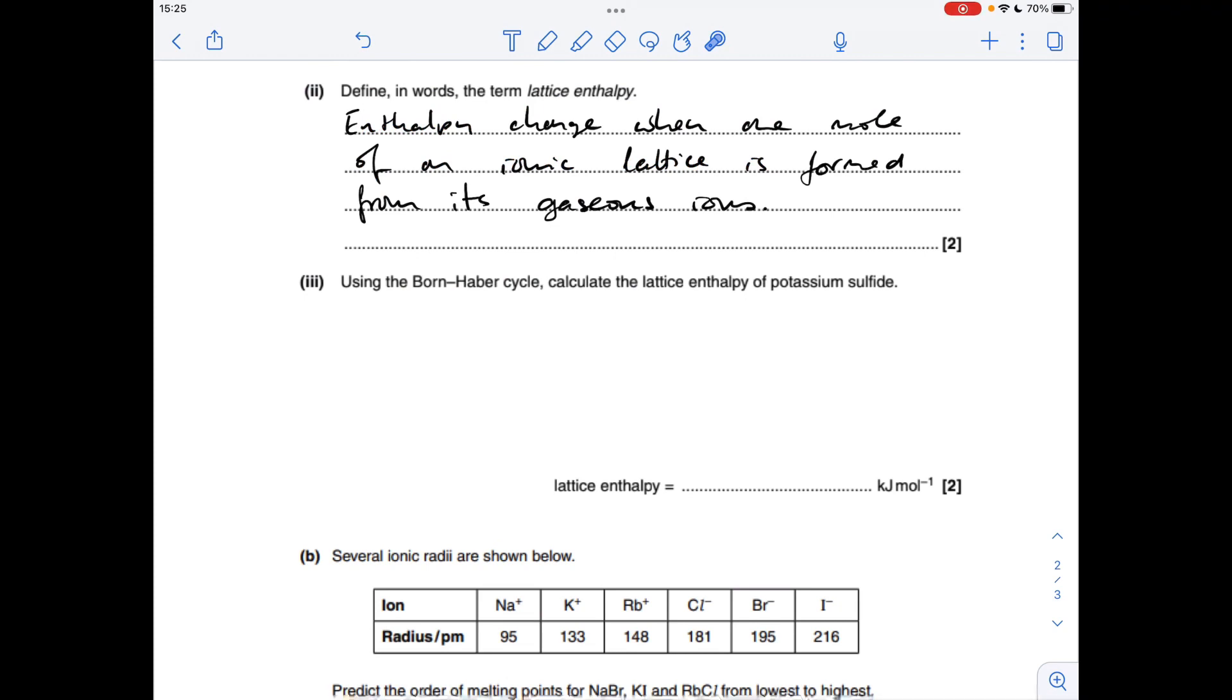Next part is just the definition. So the definition of lattice enthalpy is the enthalpy change when one mole of an ionic lattice is formed from its gaseous ions.